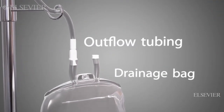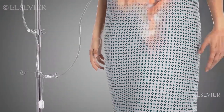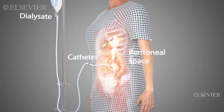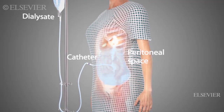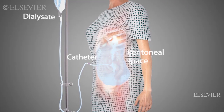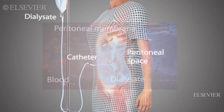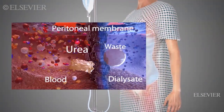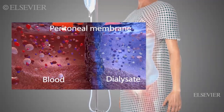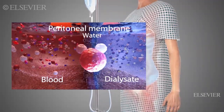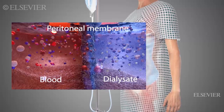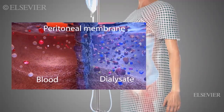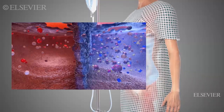Peritoneal dialysis occurs in exchange cycles, and each cycle has three phases. In the infusion, or fill phase, one to two liters of dialysate infuse by gravity into the peritoneal space. In the dwell phase, the dialysate stays in the cavity for a specified time. Here, the vascular peritoneum acts as a semipermeable membrane, allowing the exchange of wastes, fluids, and electrolytes through osmosis, diffusion, and filtration.